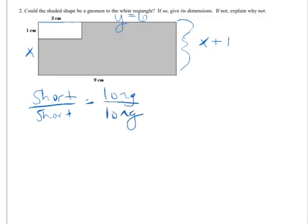The two rectangles I'm comparing are the white rectangle and the glued together white and shaded pieces. So the short side of the white rectangle is 1, and the short side of the large outer rectangle is x plus 1.